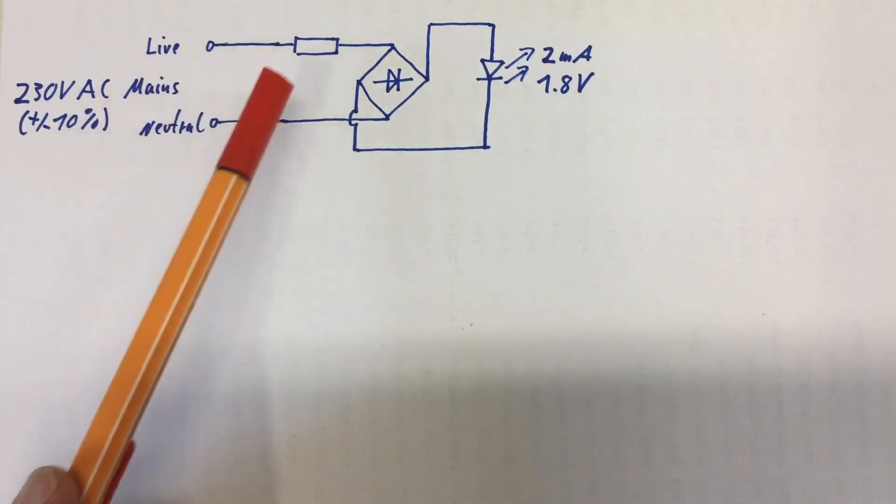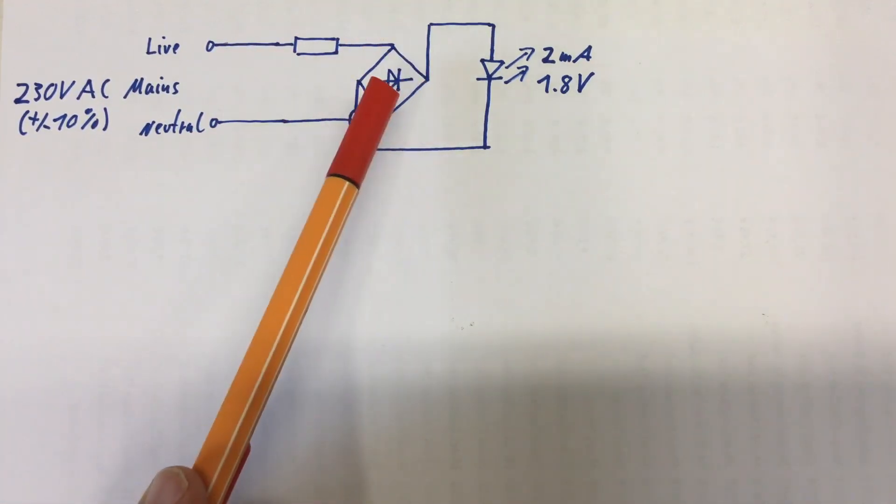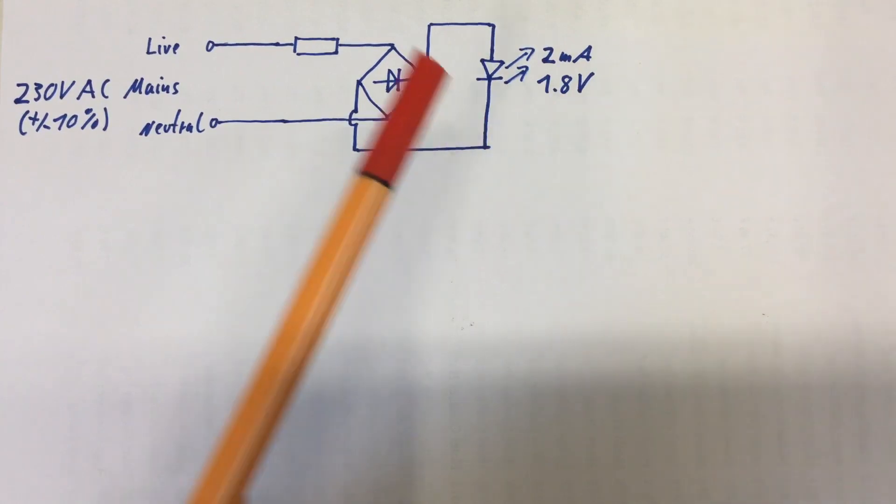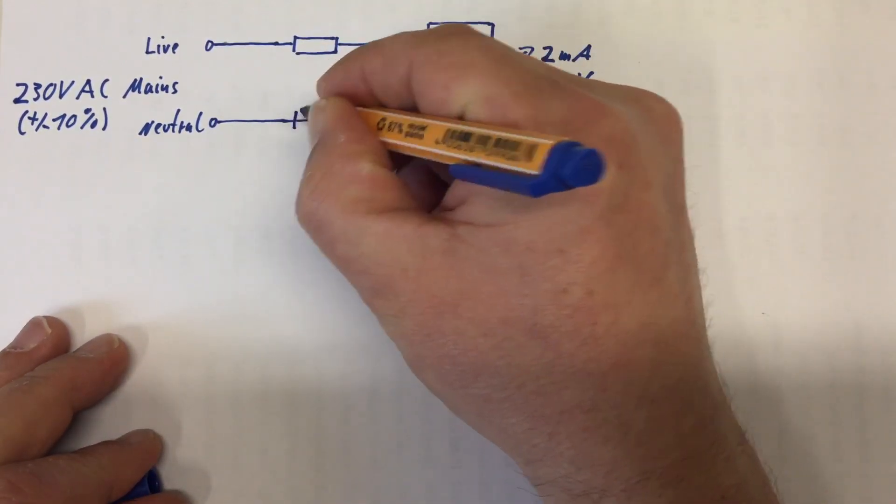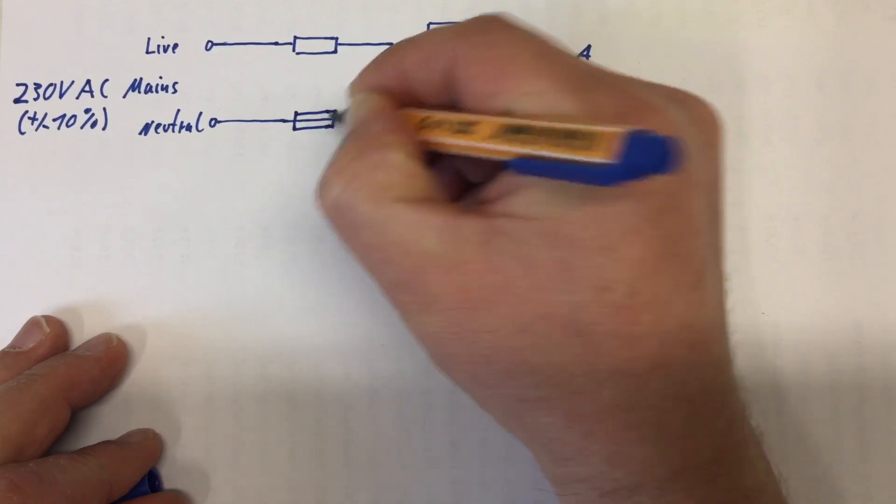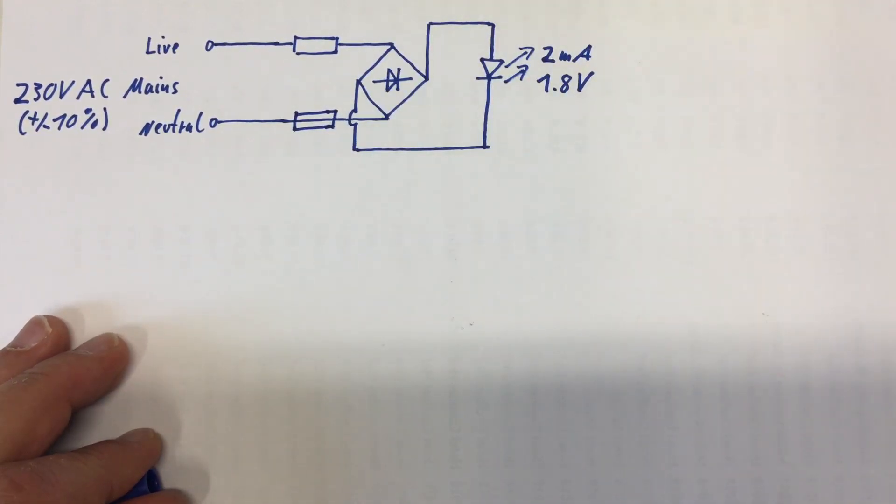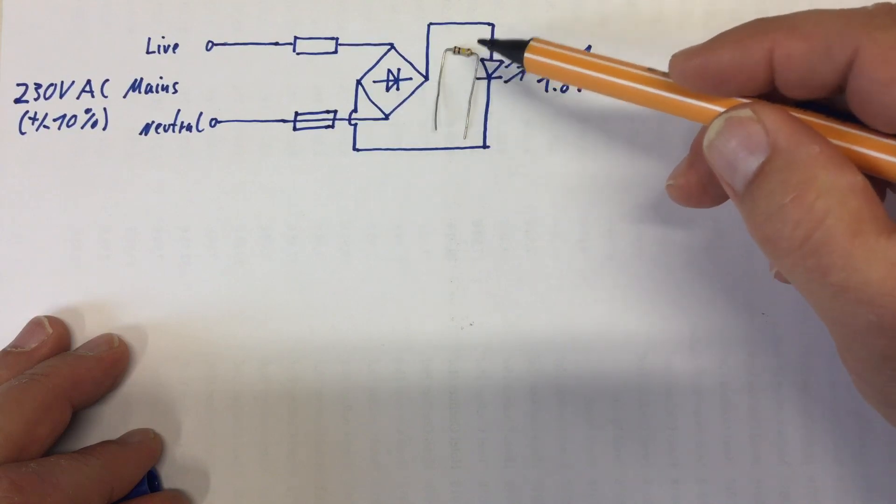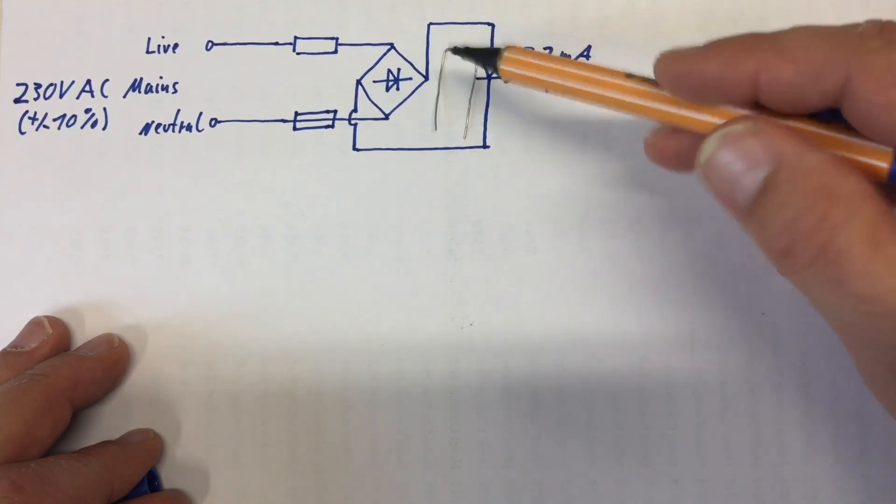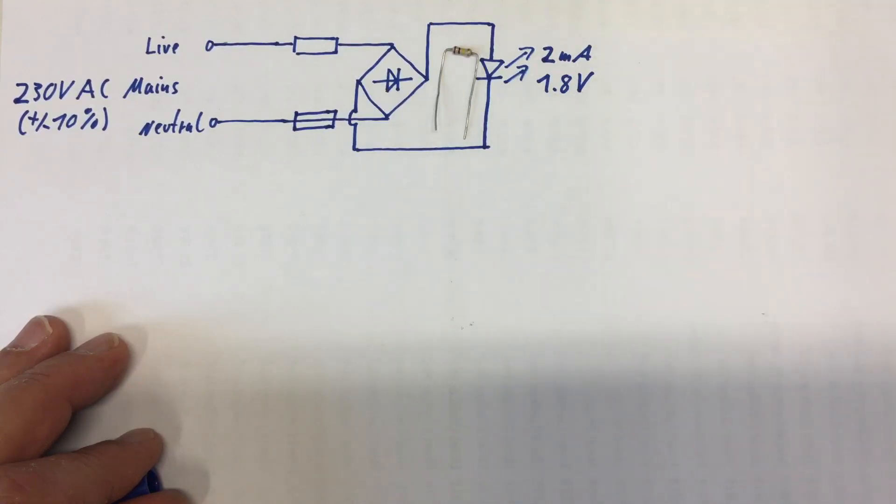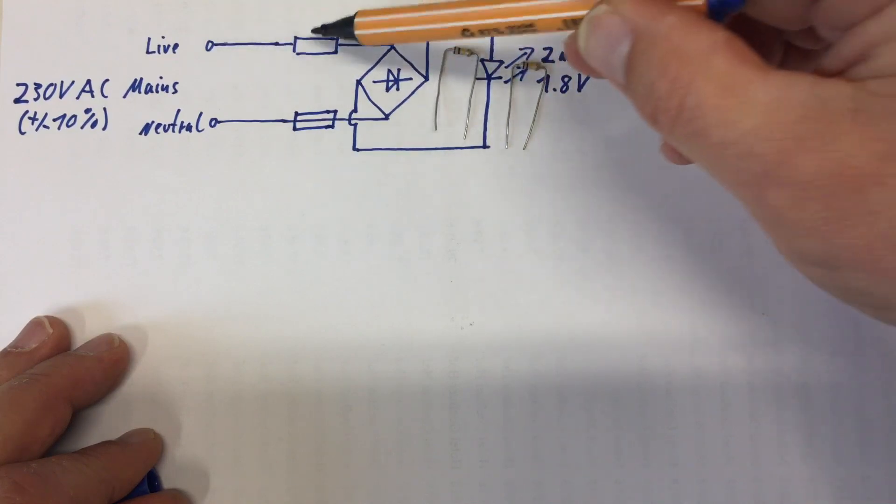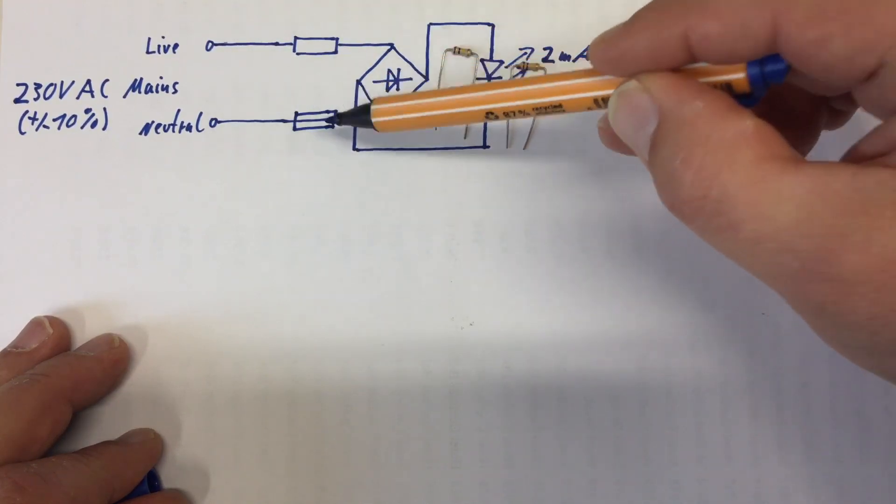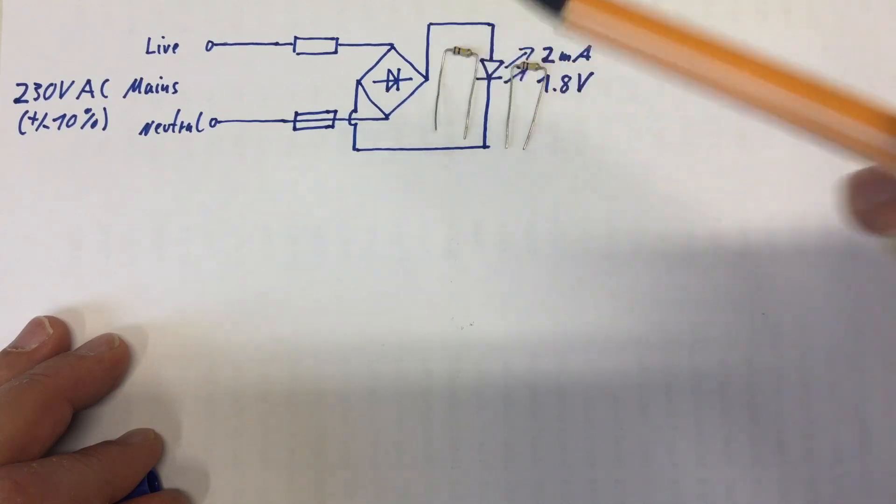So AC mains, a resistor, a bridge rectifier, and the LED. However, the first enhancement here is, and he mentioned this verbally in his video, we will use two resistors because these thingies, they are not rated for that voltage, okay? You need two somehow in series. It doesn't matter if they are in series here, or here and here, or down below both of them. But you need two of them.